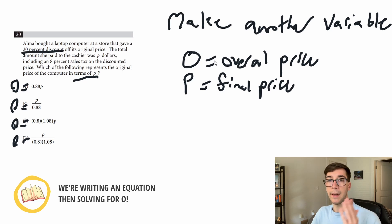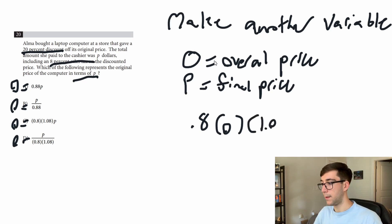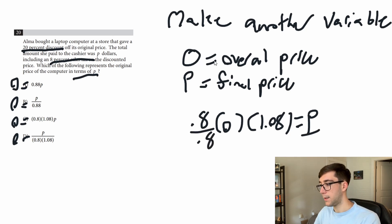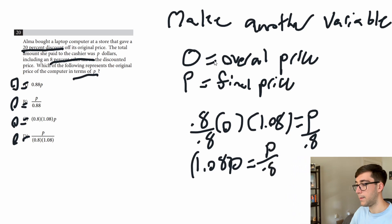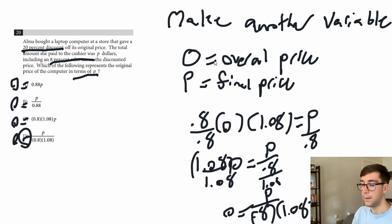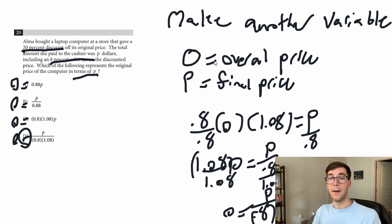A 20% discount means she pays 80% of the full price: 0.8 times o. Then an 8% sales tax means times 1.08, so 0.8 times o times 1.08 equals p. To isolate o: divide both sides by 0.8, giving 1.08 times o equals p over 0.8. Then divide both sides by 1.08: o equals p divided by (0.8 times 1.08). That matches one of the answer choices. Always identify variables, know the equation types, and for 'in terms of' problems, add another variable and solve for it.